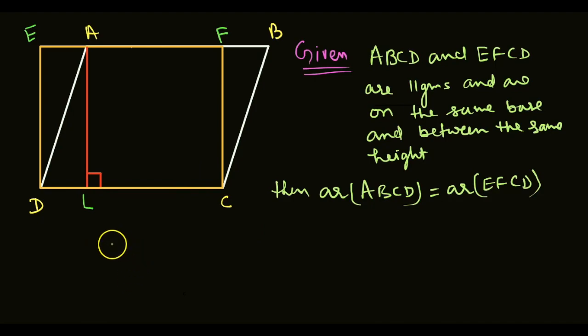Area of rectangle is base into height, so area of E, F, C, D equals base, yani ki C, D, into height, yani ki AL.